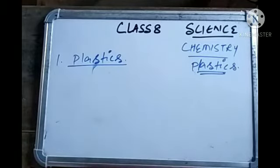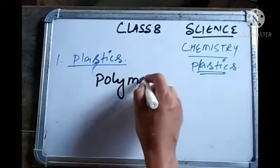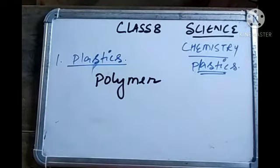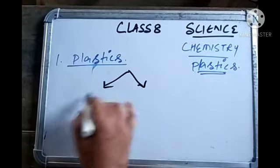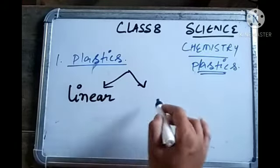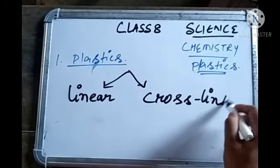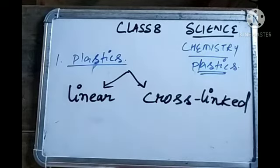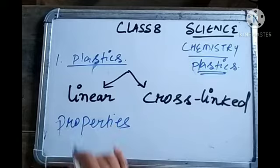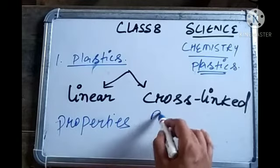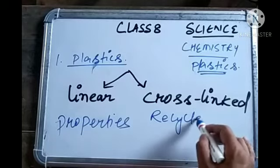Like synthetic fibers, plastic is also a polymer — they are made of many smaller units joined together. In your textbook, two types of arrangement are given in the case of plastic: one is linear arrangement and the other is cross-linked arrangement. At the start of the topic, some properties of plastics are discussed: they can be recycled, they can be reused, and they are found in a variety of colors.